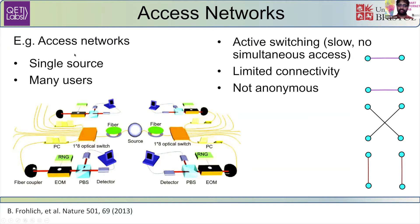These access networks are nice because they have a single source and you can have many users, but because of the active switching they're slow, they have limited connectivity, and they cannot be anonymous because you have to send a request saying can user A be connected to user B, so everyone knows who's talking to whom.